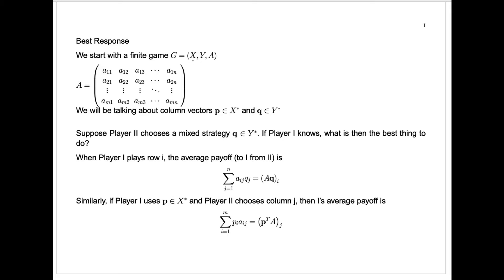Now instead of sticking with pure strategies — the set of which is X for player one and Y for player two — we'll talk about mixed strategies. Think of X star as the set of all mixed strategies. We're going to let P here be a column vector P1, P2 through PM, representing for player one picking the first of the M strategies with probability P1, the second with probability P2, up to the Mth with probability P sub M. Among all the different probability vectors P in X star, those represent all the different mixed strategies. All the P1, P2 through PM have to be greater than or equal to zero, and they have to sum up to exactly one to be called a probability vector.